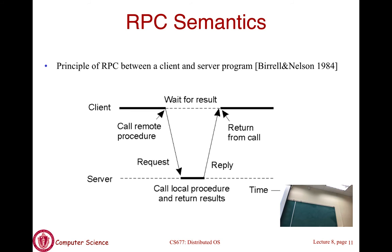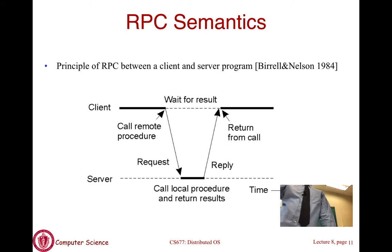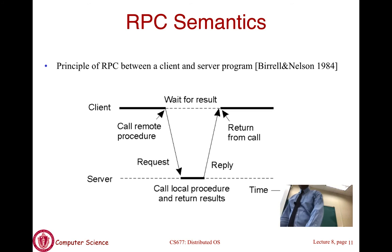Looking at the timing diagram: the client is initially executing while the server waits. The client calls the remote add function, which causes a network message to go to the server. The server processes and replies. During this time, the client is blocked—waiting for add to return—just as a normal function call blocks the caller until the callee finishes. Once the reply arrives, the client resumes. This is synchronous, blocking communication.